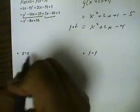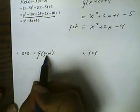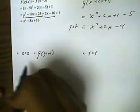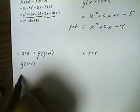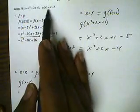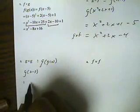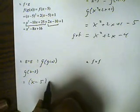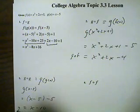g composed with g means that we're using g as the input function to g. g itself as the input function will be x minus 5, so we're putting x minus 5 into the function g. Everywhere we see an x in g, we're going to replace it with x minus 5. So instead of x and then the minus 5, we're going to substitute x minus 5 for x. This will be x minus 5 and then minus 5. We can put these together and make this a minus 10. And this is g composed with g.